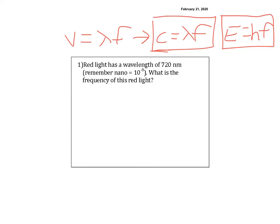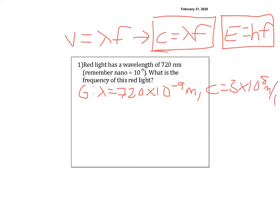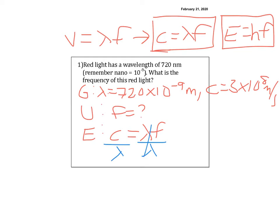Red light has a wavelength of 7.2 nanometers, where nano is 10 to the 9th. What is the frequency of this red light? Given: lambda equals 720 times 10 to the negative 9th meters, and C equals 3 times 10 to the 8th meters per second. The unknown is frequency F. My equation is C equals lambda F, so I divide both sides by lambda.